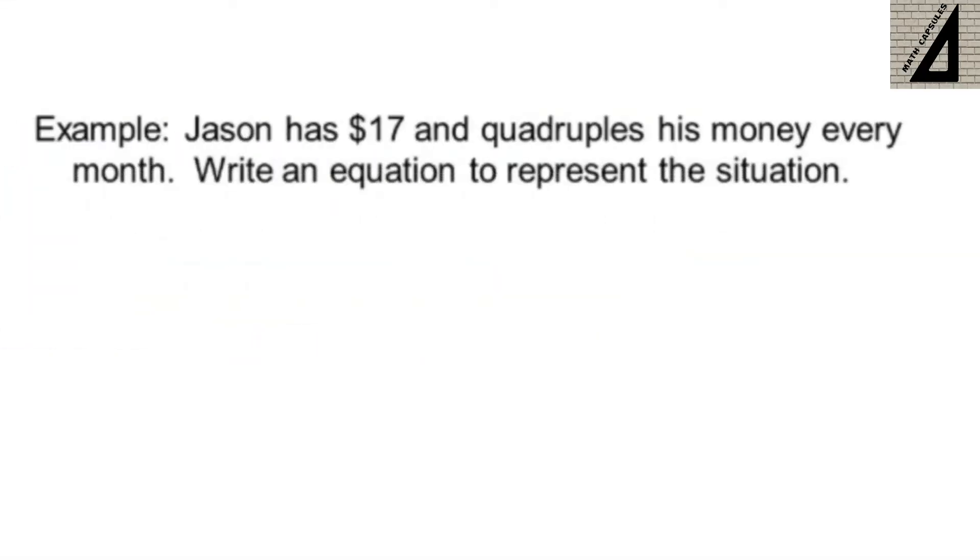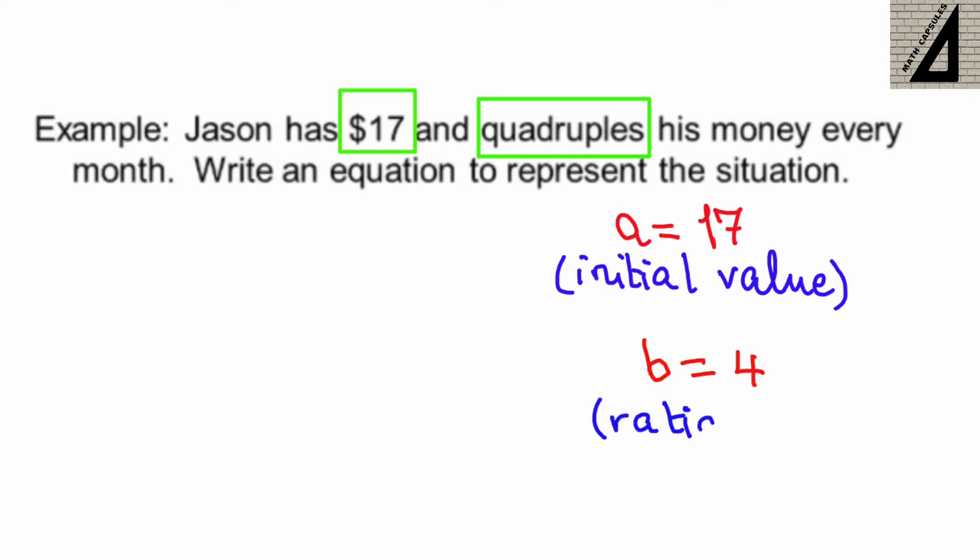An example: Jason has 17 dollars and quadruples his money every month. Write an equation to represent this situation. 17 dollars is the initial value a, while quadruples means the factor or ratio b is 4. So the equation would be y equals 17 times 4 to the power x, where 17 is a and 4 is b.